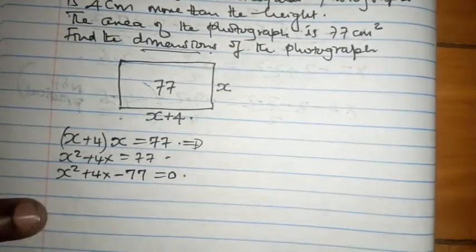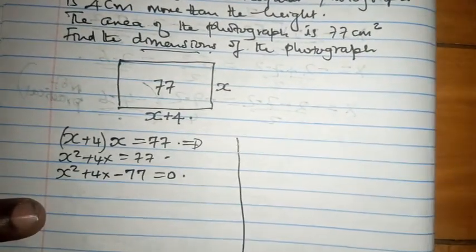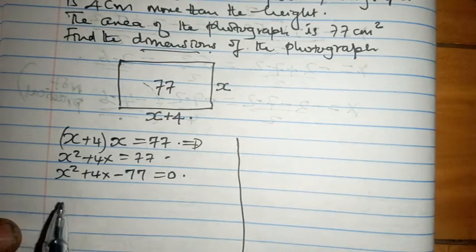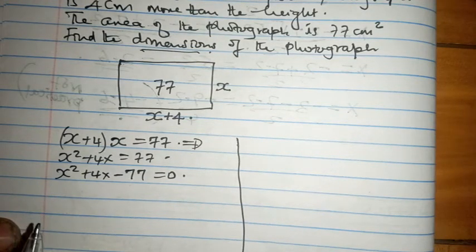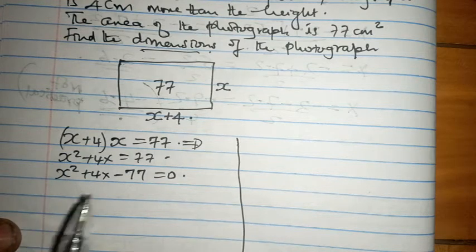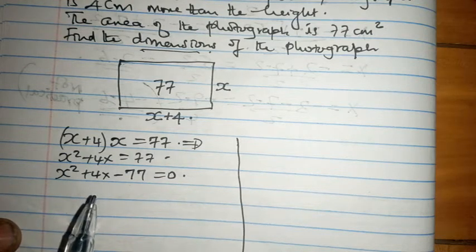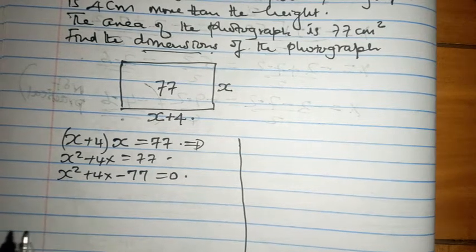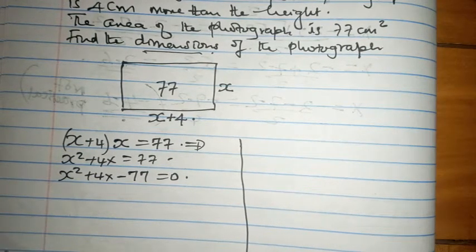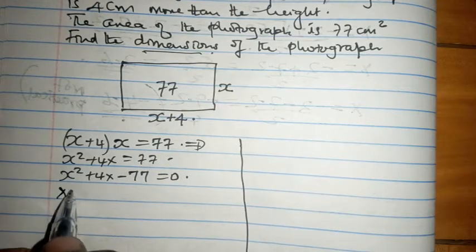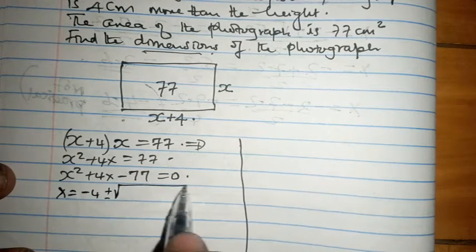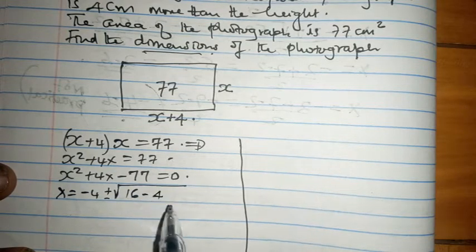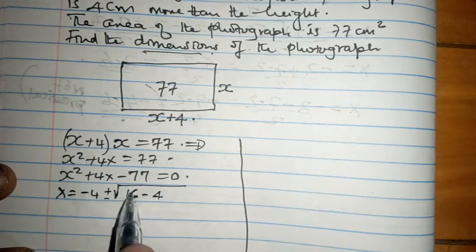Now that we have learned the quadratic formula, I would encourage everybody to, even when we have very clear factors here like 11 and 7, let us use the quadratic formula and say x equals minus 4 plus minus square root of 16 minus 4 times 1 times minus 77, everything over 2 times 1.